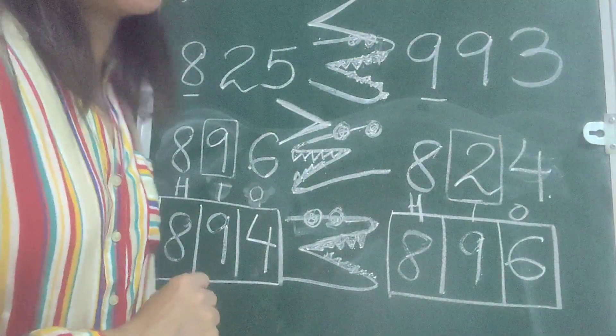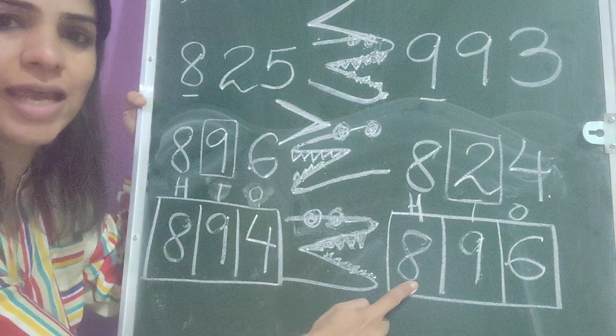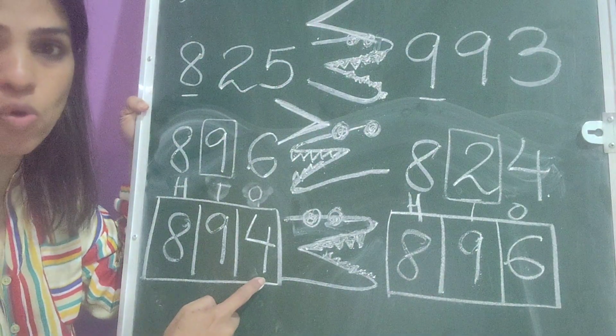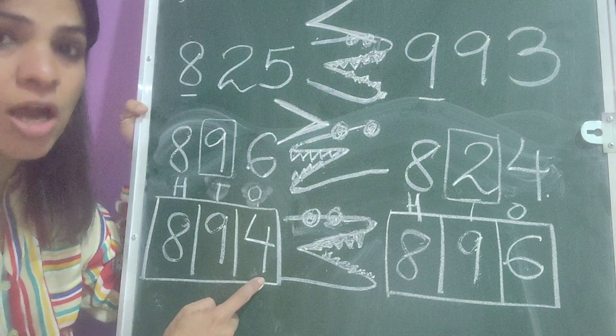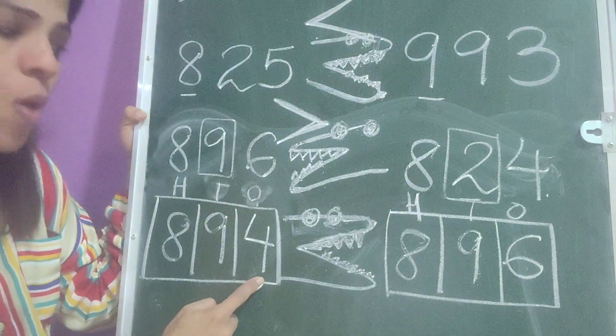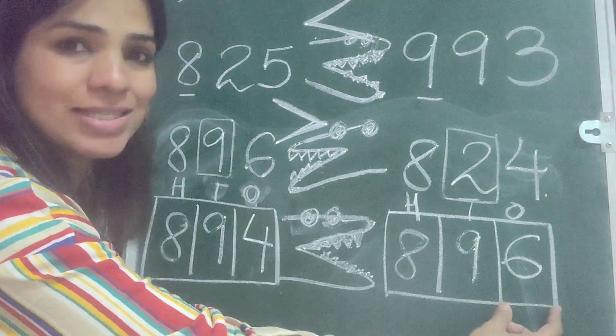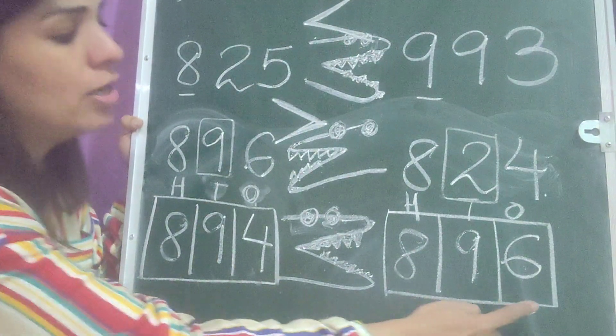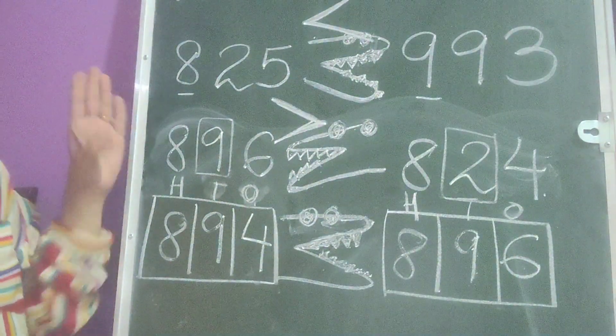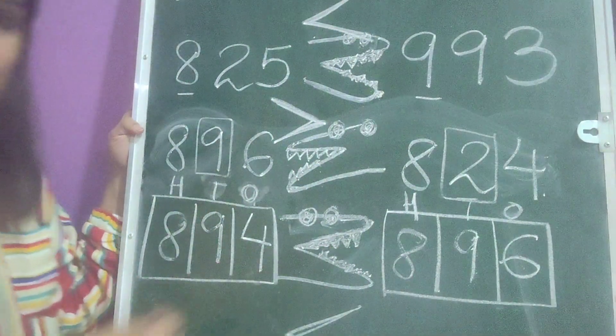Let me take you to my next number, that is 894 and 896. Eight and eight are same. Tens place value digit, nine and nine are same. And so the alligator is most confused but never gives up trying and moves to ones place value. That is ones place value and picks up 4 and 6. Four is smaller, six is bigger, so this whole number becomes bigger and the alligator eats the bigger number.